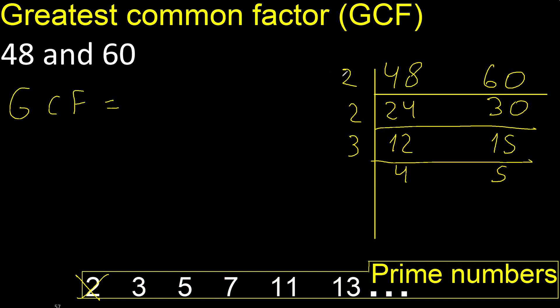Multiply: 2 times 2 times 3. Multiply by 2 is 4, multiply by 3 is 12. Finish.